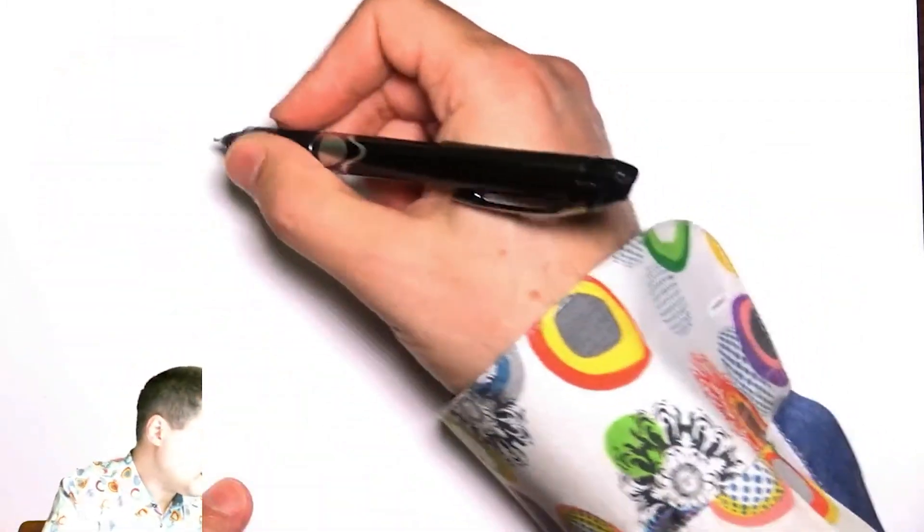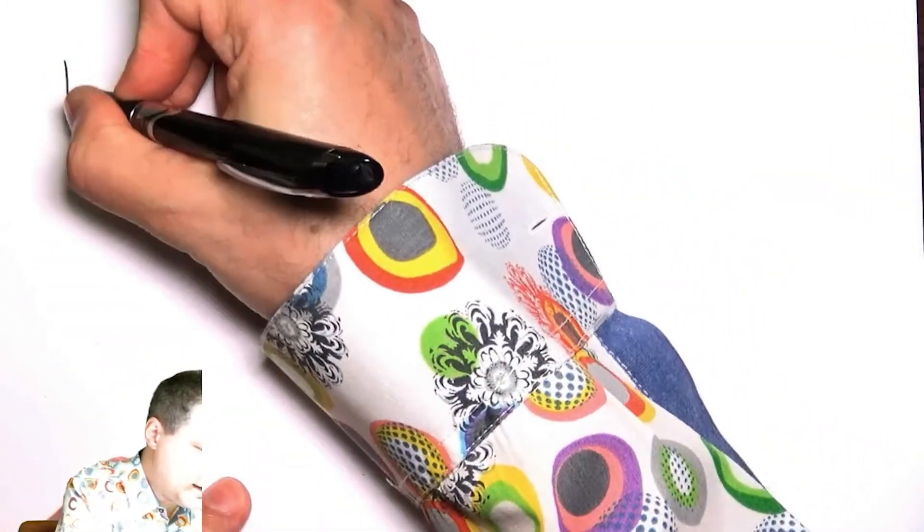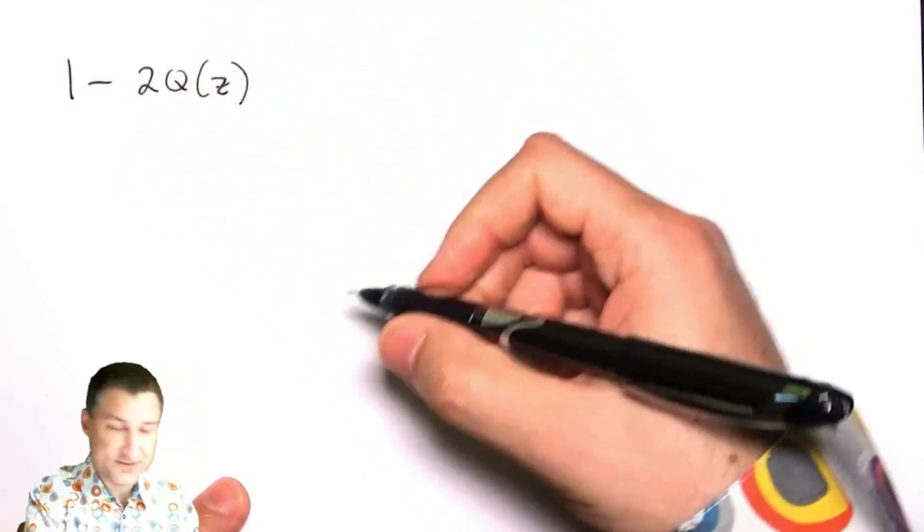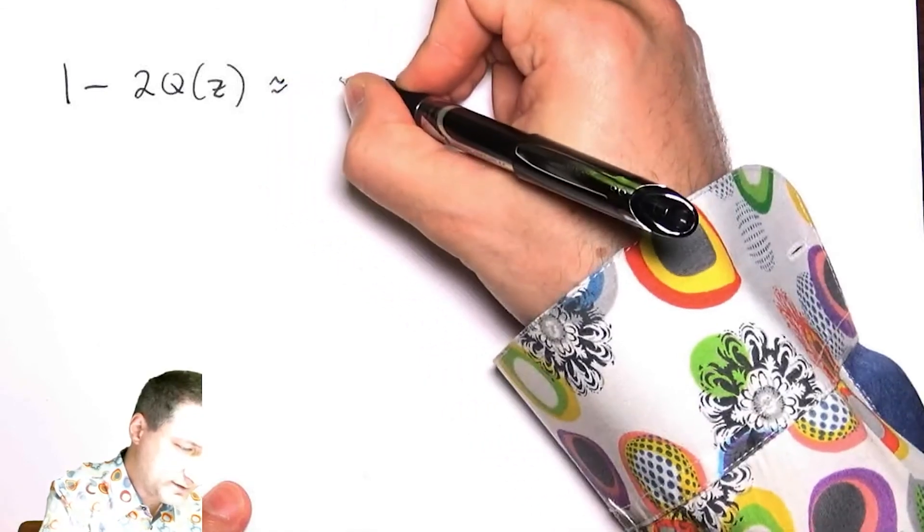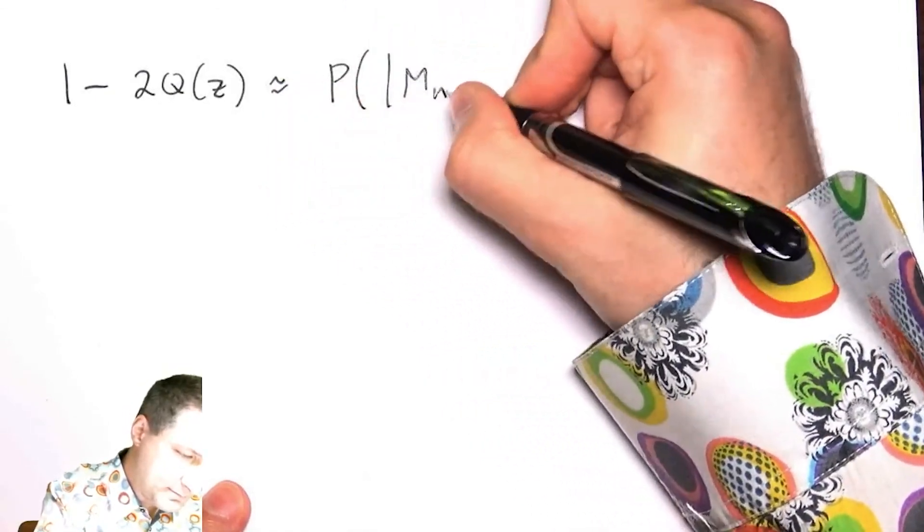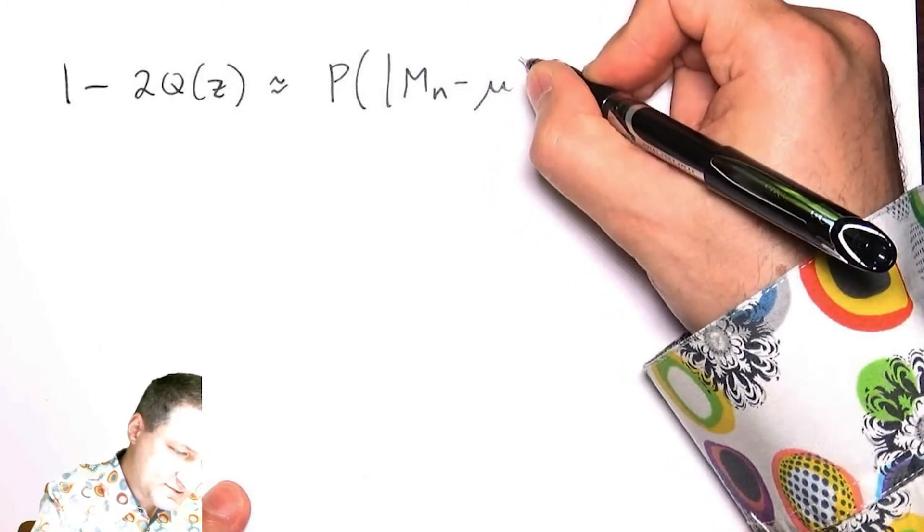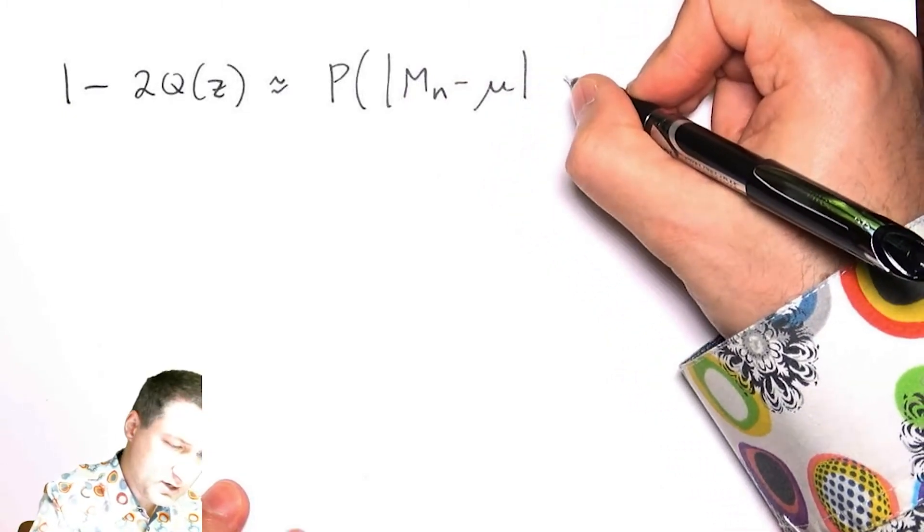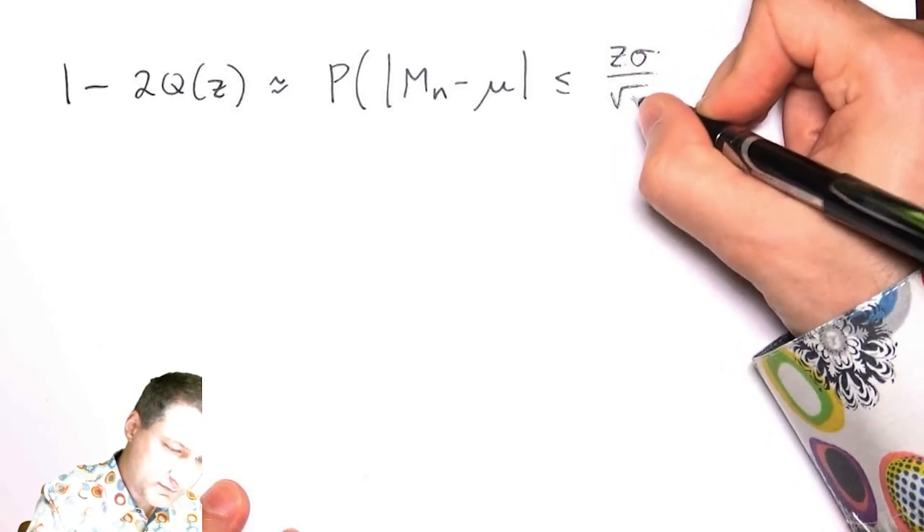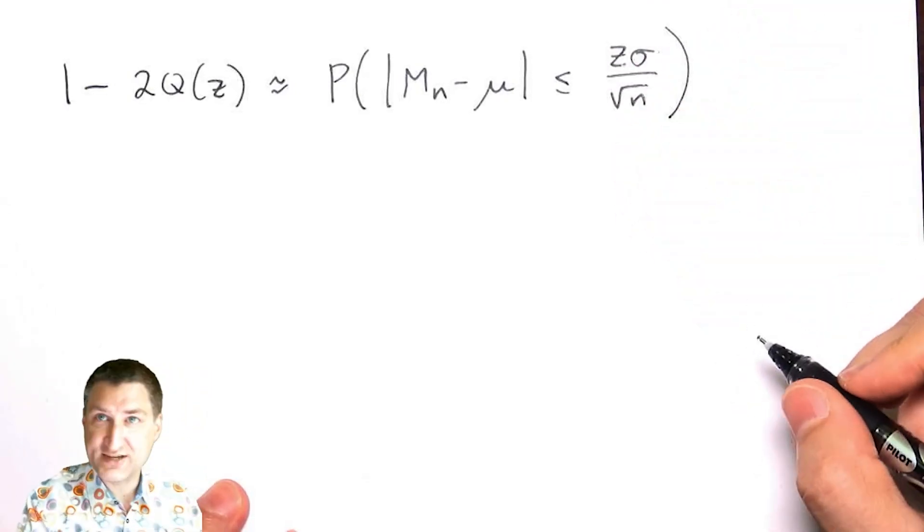This number, which comes from the Gaussian CDF and the central limit theorem, is approximately the probability that my sample mean minus the true mean is within z·σ/√n, which we've spent a bunch of lessons fooling around with.